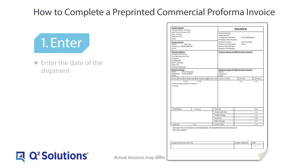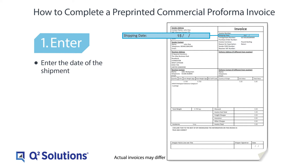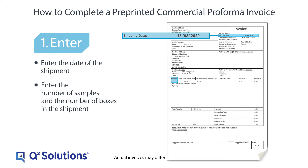Enter the date of the shipment. Enter the number of samples and the number of boxes in the shipment. And enter the IORI number.